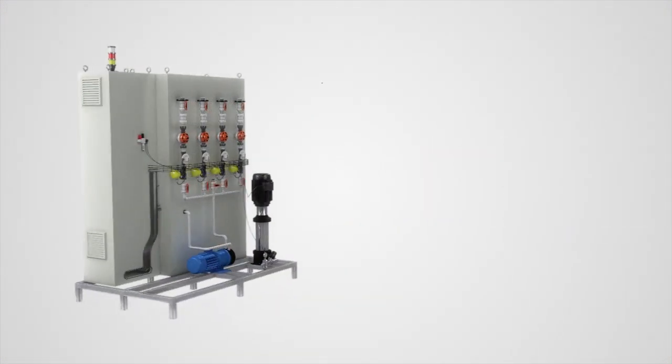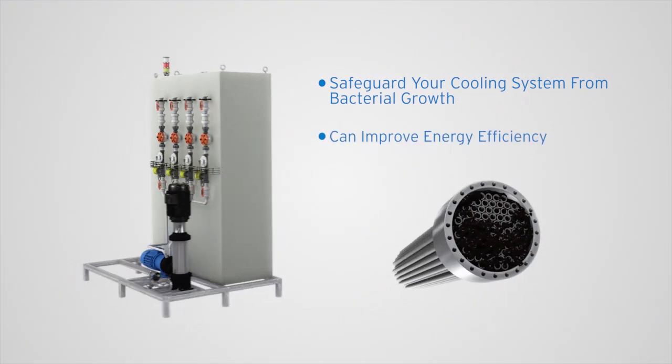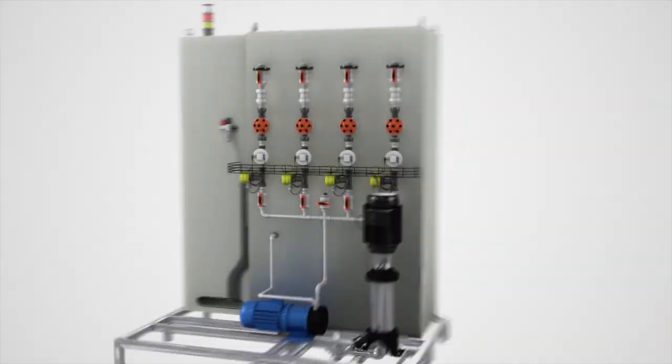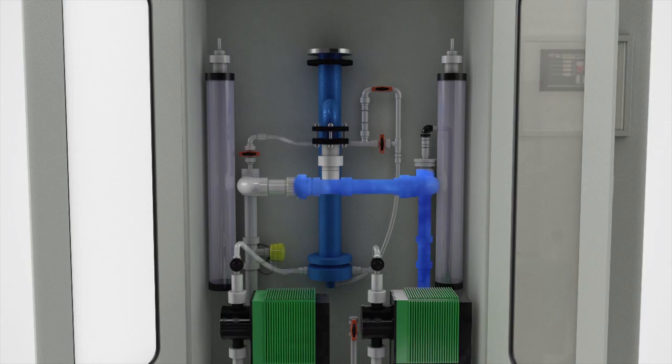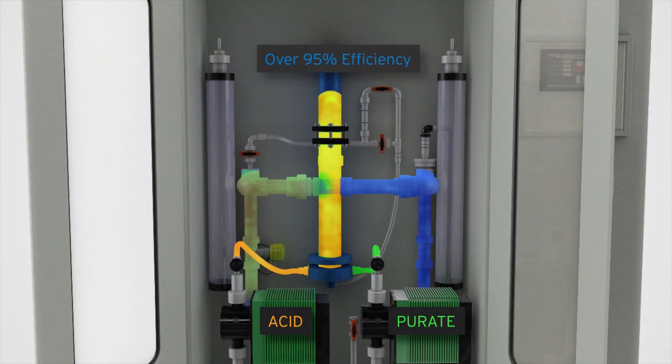Purate by Nalco Champion helps safeguard your cooling system from bacterial growth and increases its energy efficiency by improving heat exchange. The Nalco Champion SVP Pure Generator produces chlorine dioxide at a higher efficiency than most other generator technologies, with efficiencies over 95%.